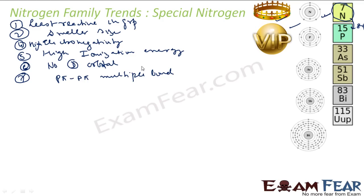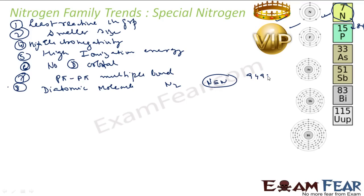Another feature of Nitrogen is that it exists as a diatomic molecule N2, with a triple bond. This bond is very strong — it needs almost 949 kilojoules per mole of energy to break this bond. Phosphorus, Arsenic, and Antimony form single bonds, but Nitrogen forms a triple bond. Triple bond is unique to Nitrogen.